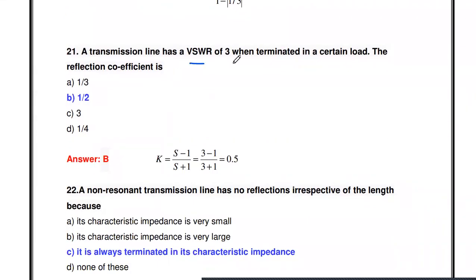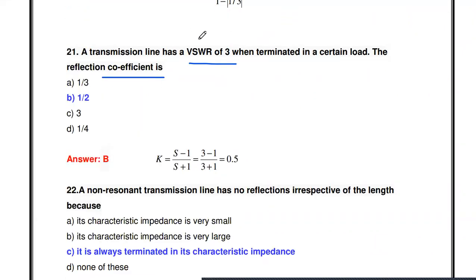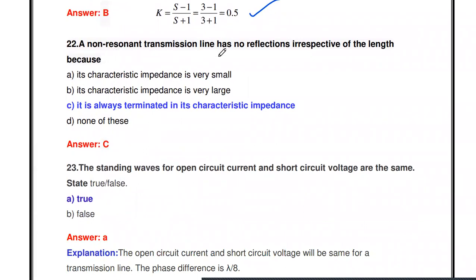A transmission line has a VSWR of 3; the reflection coefficient is — what? Using k = (S − 1) / (S + 1) = (3 − 1) / (3 + 1) = 2 / 4 = 0.5. The reflection coefficient is 0.5 (or 1/2).